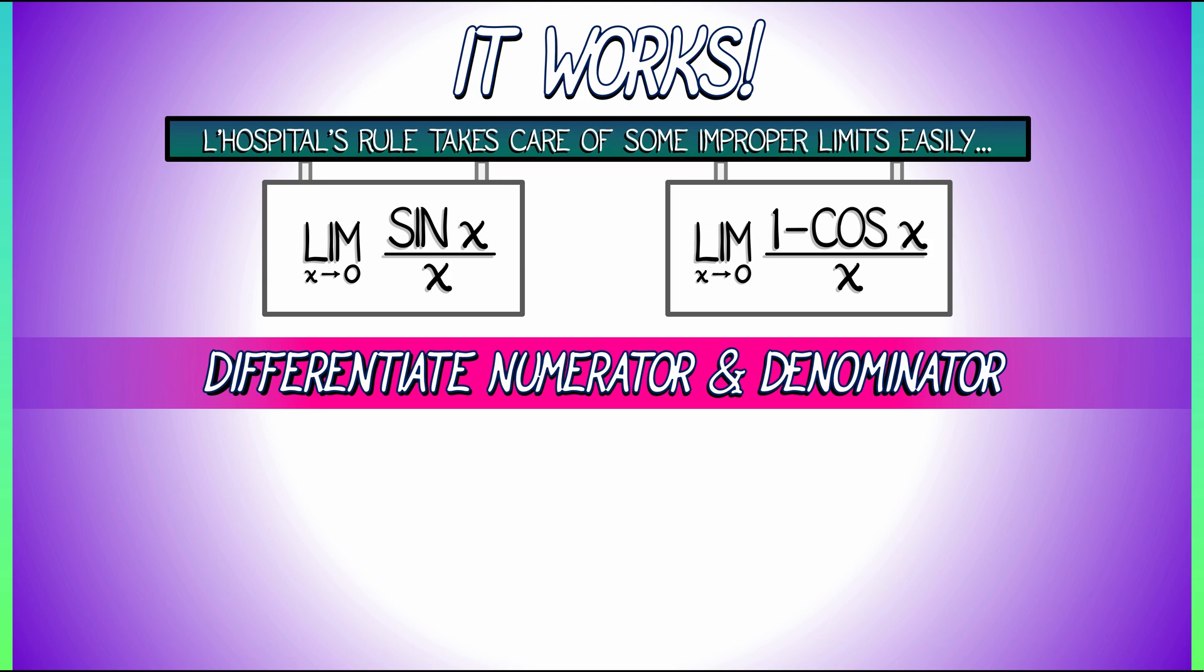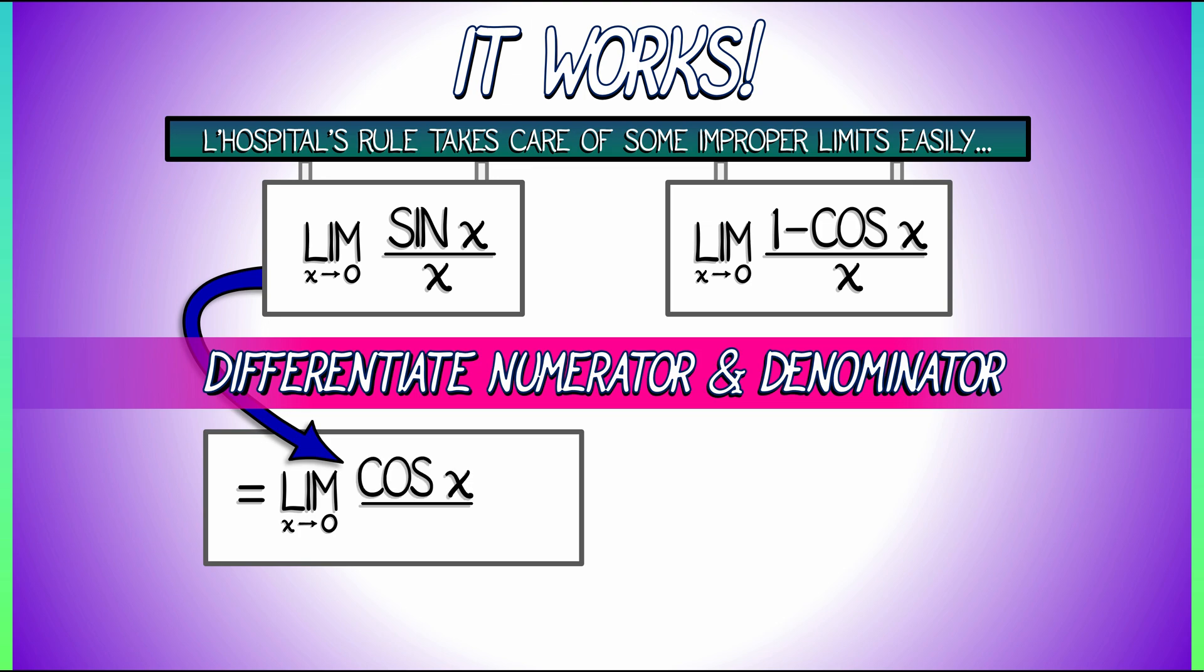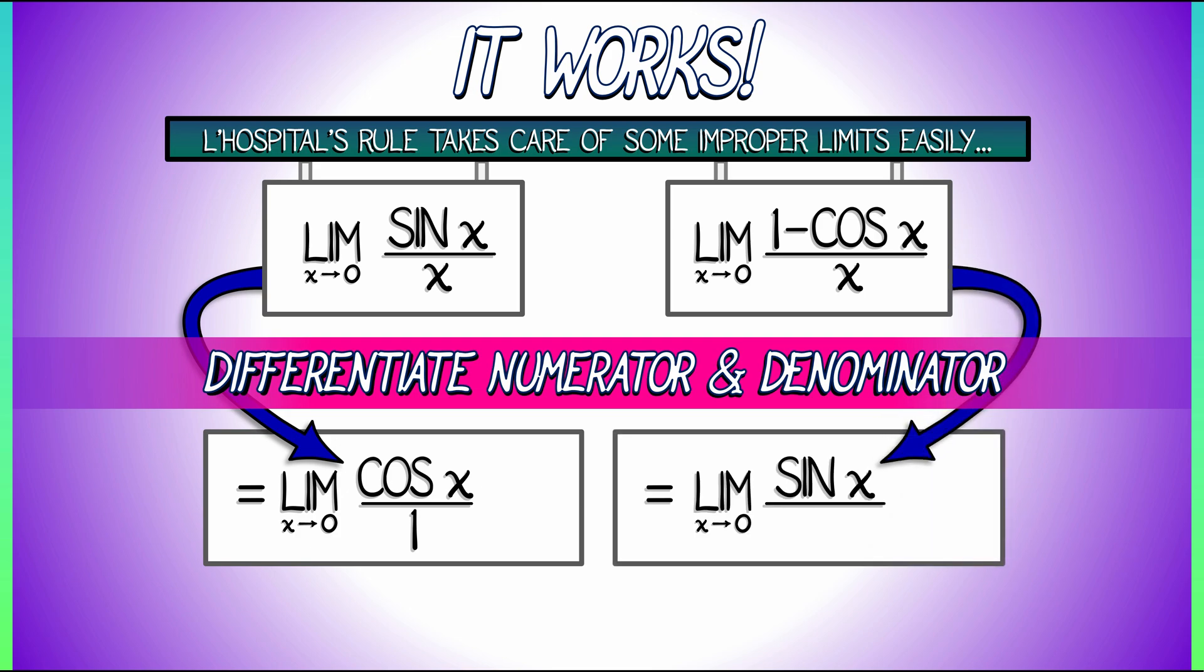In the two examples that we've looked at, in the first case, sine of x over x, take the derivative of the numerator, you get cosine of x. Take the derivative of the denominator, you get one. In the other example, what's the derivative of one minus cosine of x? It's sine of x. And again, the denominator, the derivative of that is one.